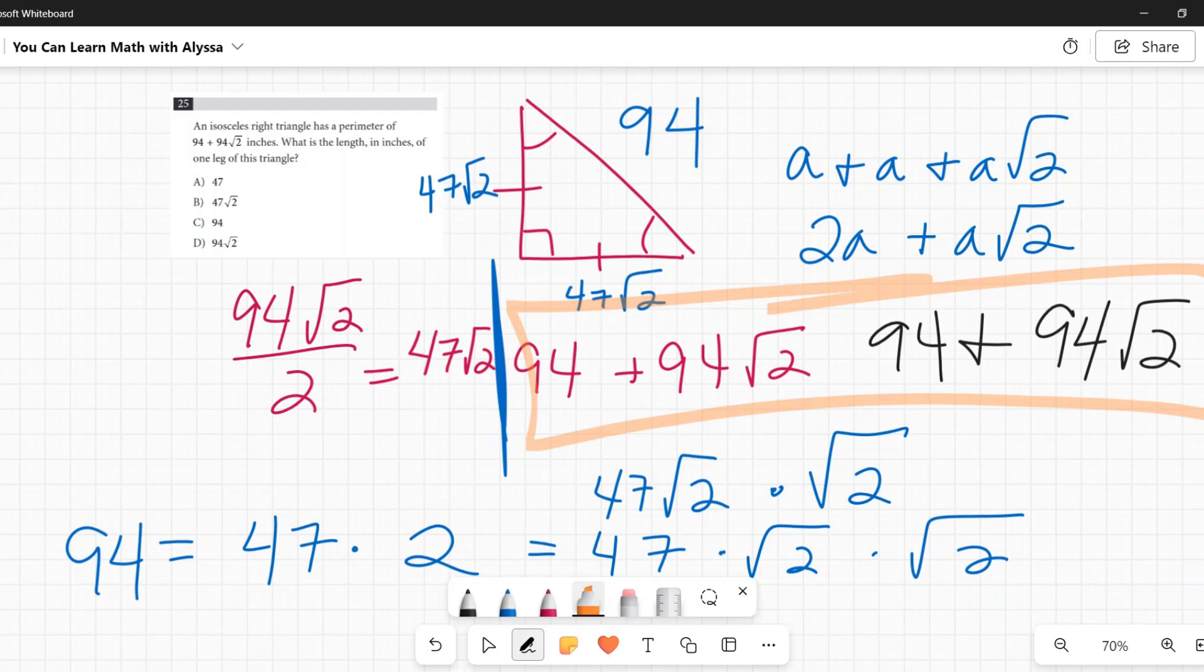Those match. We are correct. The leg is 47 times the square root of two. That's it - B is our answer.